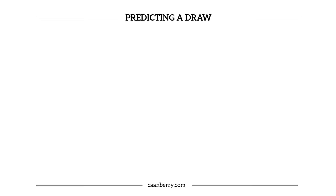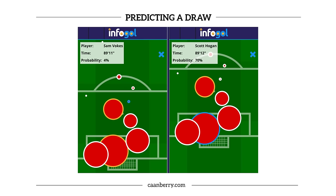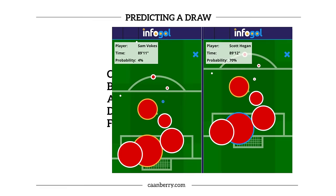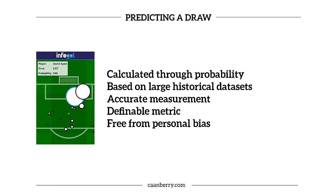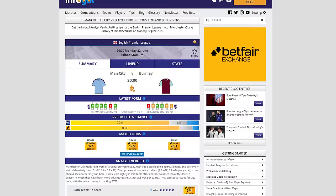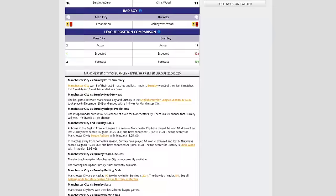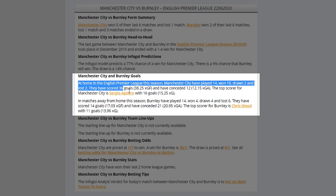Expected goals is an analytical database that measures the probability of goals in a football match based on large historical data sets — you can't really argue with it, it's fact. It's important because it's an accurate measurement free from personal bias, which you see a lot in football. It's probably the best benchmark we've got when deciding if a team is performing on form or not, because the numbers don't lie.